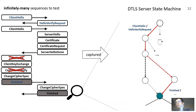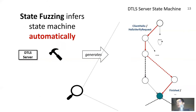Testing for these bugs is challenging since there are infinitely many possible sequences to check for. Fortunately, the server's behavior for these sequences can be captured in a finite state machine. We can then analyze the state machine for bugs. State fuzzing is a technique which will generate the state machine for us automatically, which is why we employed state fuzzing in our own work on testing DTLS servers.